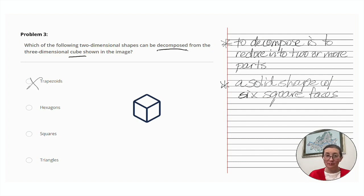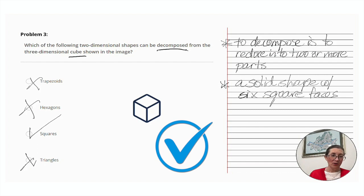So let's look at our options. Trapezoids? No. Hexagons? No. Squares? Yes. Triangles? No. We can confidently answer squares.